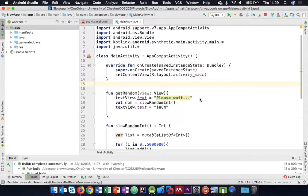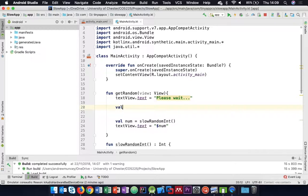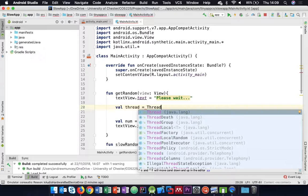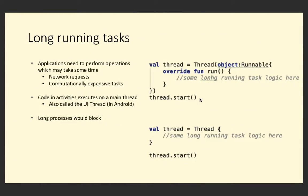To do that, we create a thread. We can say something like val thread equals Thread. A thread's constructor requires any object that implements the Runnable interface. The Runnable interface has one method called run. Just like implementing an onClick listener, we can use Kotlin's optimizations - where there's one method in the interface, we can essentially omit that code and just write thread brackets, and what we put in there is placed automatically into the run method.